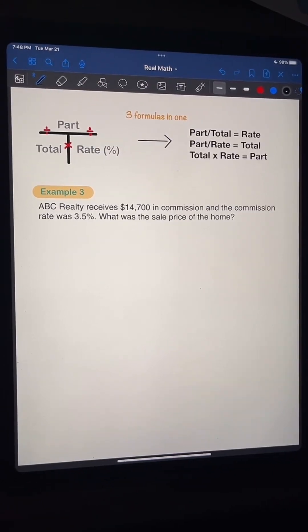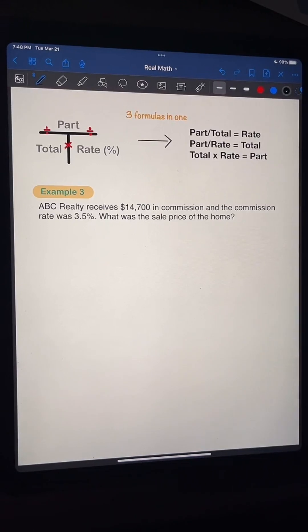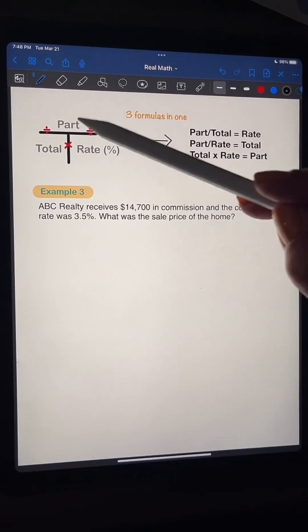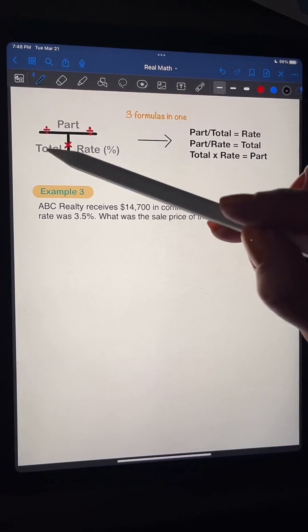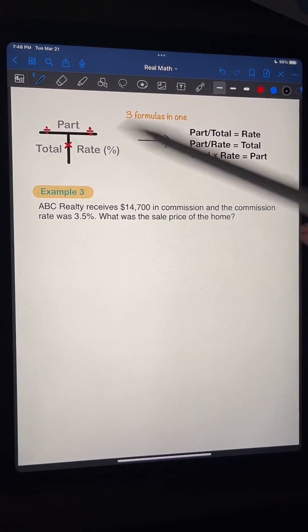All right. So here we have the last question for tonight. And it's using this T method for solving these commission problems. All right? So remember, part is your commissions, total is how much the house sold, and rate is what's the commission rate. Okay?